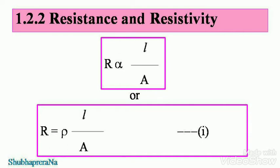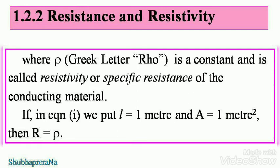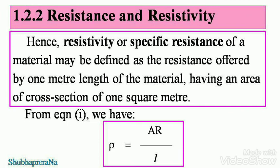To remove the proportionality symbol, we use a constant: R equals rho times L divided by A — take this as equation 1, where rho, the Greek letter, is a constant called resistivity or specific resistance of the conducting material. If in equation 1 we put L equal to 1 meter and A equal to 1 meter squared, then R equals rho. Hence, resistivity or specific resistance may be defined as the resistance offered by 1 meter length of material having a cross-section of 1 square meter.